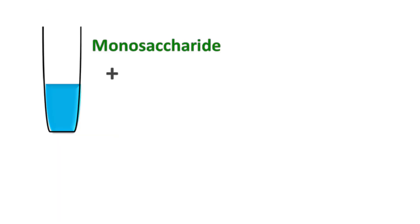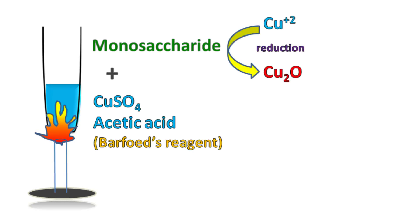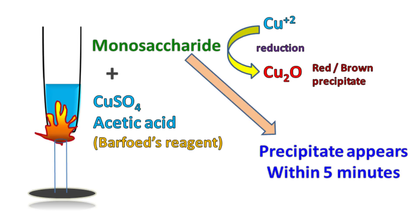When monosaccharides are heated with Barford reagent, the copper ions are reduced to copper oxide, which is red or brown in color. This reaction takes place within 5 minutes.